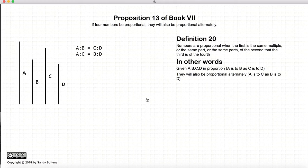Let's start with four numbers that are proportional. A, B and C, D are in proportion, so the ratio of A to B is equal to the ratio of C to D. This proposition states that the alternative proportions are also equal. In other words, A to C will be the same ratio as B to D.